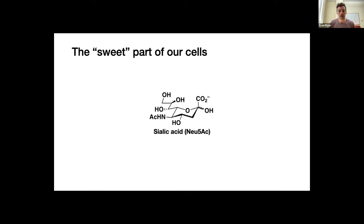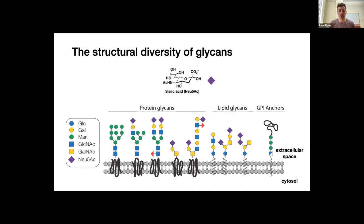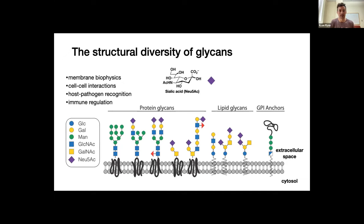This is a chemical drawing of one monosaccharide called sialic acid. The abbreviated name is Neu5Ac, and we abbreviate further with colored shapes because they can become very complex. You can get a number of configurations and combinations put on proteins or lipid templates. Most of the glycomass exists in the extracellular space or luminal compartments of organelles. They perform a hugely large number of important functions including membrane biophysics, cell-cell interactions, post-pathogen regulation, and immune regulation.